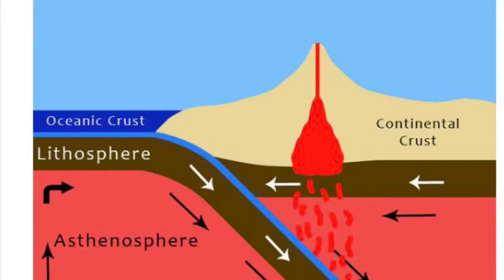This is an excellent image from a website called study.com, and it shows ocean crust — they call it lithosphere — subducting underneath the continent. This is what has been happening all along the coast of California and is now happening along northern California and Oregon, and that is what's creating the Cascade Mountains, which are active volcanoes.